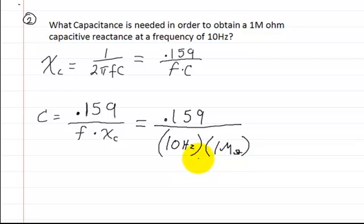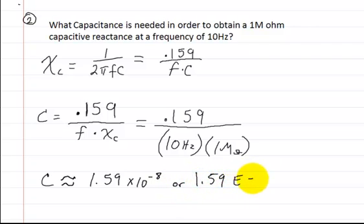So if you plug this into your calculator, you're going to end up with a capacitance. Well, remember since we have 0.159 in there, it's just about, it's roughly, it's pretty close, but not exactly. About 1.59 times 10 to the negative 8. Which is the exact same thing as say 1.59 E to the negative 8.